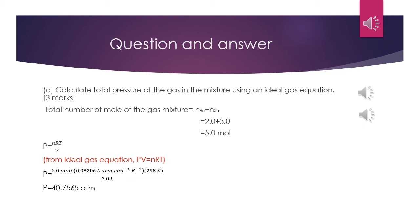The first step is to calculate the total number of moles of the gas mixture: 2.0 mol helium plus 3.0 mol xenon equals 5.0 mol. Using P = nRT / V, we substitute: P = (5.0 mol × 0.08206 L·atm·mol⁻¹·K⁻¹ × 298 K) / 3.0 L. The answer is P = 40.7565 atm.